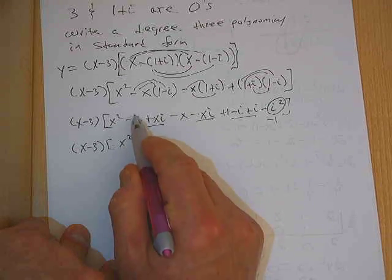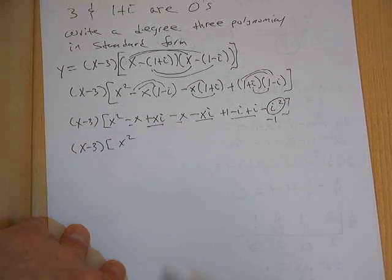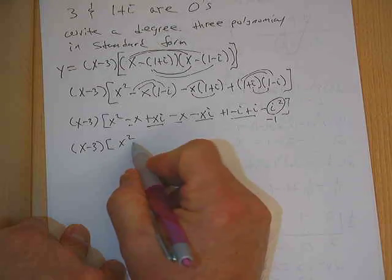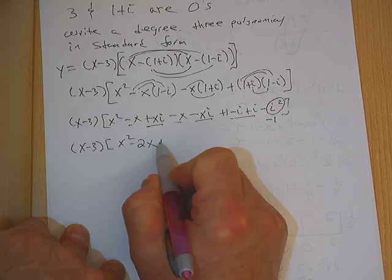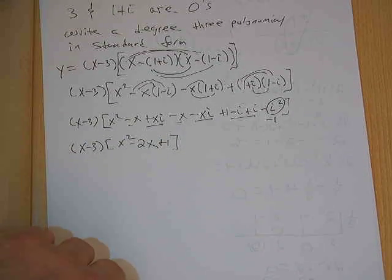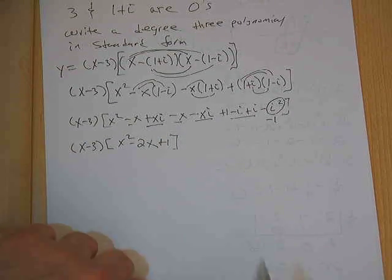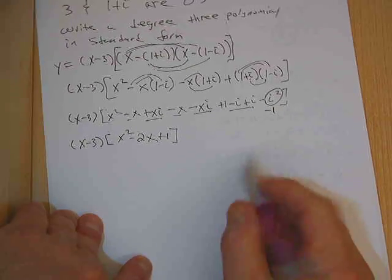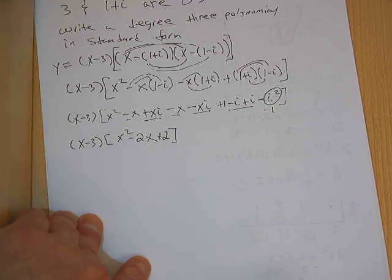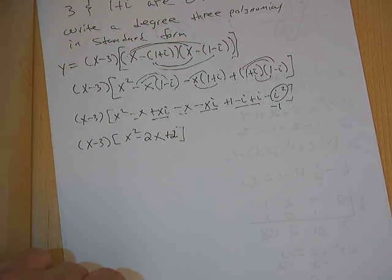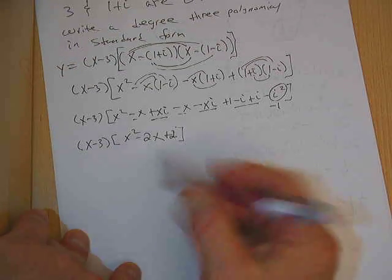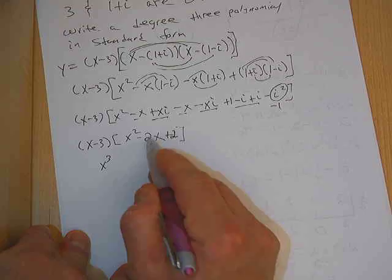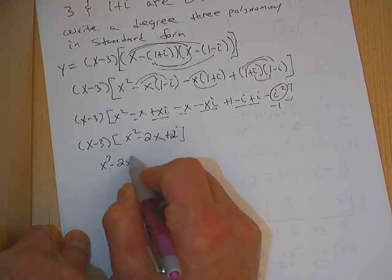So let's rewrite it now and clean this up. We have (x minus 3) times (x squared minus x minus x minus 2x minus a negative 1 plus 1). Oh, plus 2. Very good. Nice catch. Nice catch. Plus 2. Now we're back to where we were before.